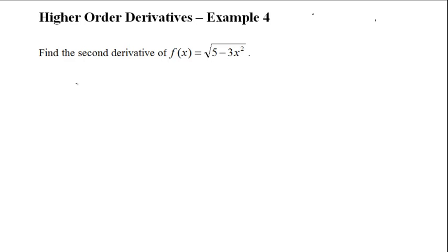This is another example of how to find a higher order derivative. The question is: find the second derivative of f at x equals the square root of 5 minus 3x squared. Since we are finding the second derivative, we need to find f prime of x, which is the first derivative, and then take the derivative again to find the second derivative.